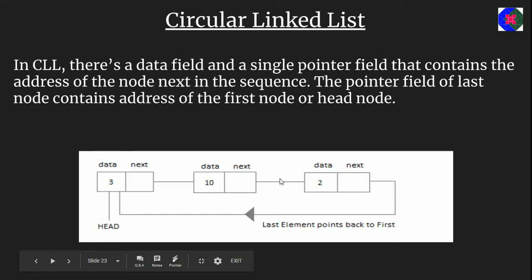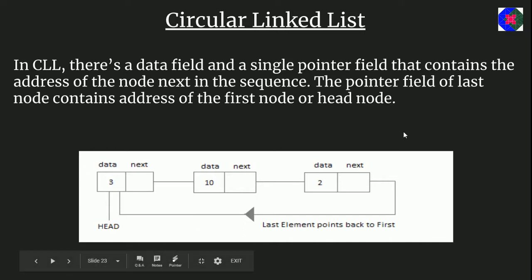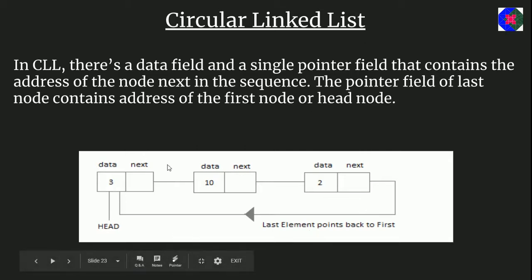In a circular linked list, there is a data field and a single pointer field, but the pointer field of the last node contains the address of the first node (head node) rather than null. For example, once a teacher finishes viva for all three students with roll numbers 3, 10, and 2, he needs to verify the group is complete. The last student knows the first student's roll number, because there is a link from the last node back to the first node — that's where circular linked list is very helpful.